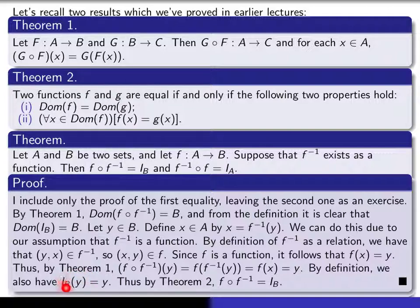And by definition, of course, the identity function on B at y is equal to y. So these two functions have the same value at each point of their domain,